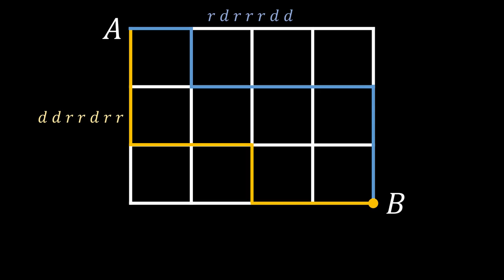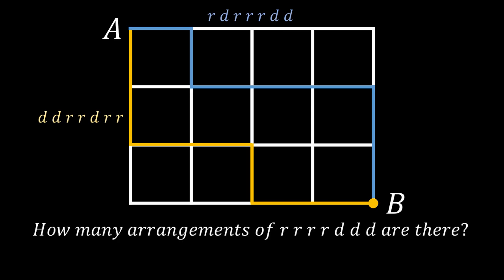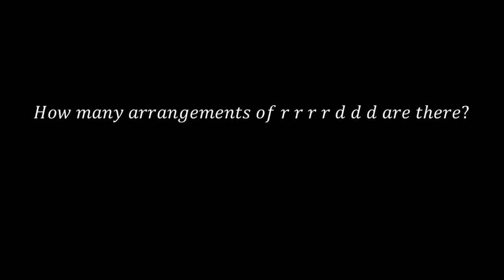So, instead of asking how many paths are there, we can change your problem to asking how many arrangements of rights and downs are there, given that there must be 4 rights and 3 downs. Here are some examples.